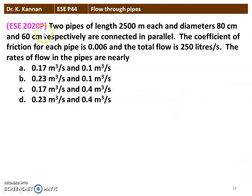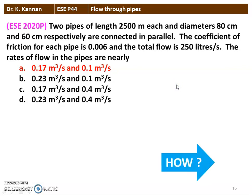The first question from the 2020 question paper: two pipes of length 2500 meter each and diameter 80 centimeter and 60 centimeter respectively are connected in parallel. The coefficient of friction for each pipe is 0.006 and the total flow is 250 liters per second. The rate of flow in the pipes are nearly — we have to find the discharge in each pipe, Q1 and Q2. The correct answer is 0.17 meter cube per second in the first pipe and 0.1 meter cube per second in the second pipe. We will see how in the next slide.